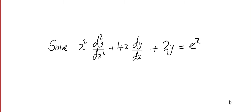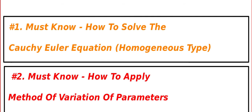Before we start, I have two conditions. Condition number one: you should be good in solving the Cauchy-Euler equation. You can search the video list in the first year playlist and find that. And same thing, you must know how to apply the method of variation of parameters. You can find these two things in the first year video list.